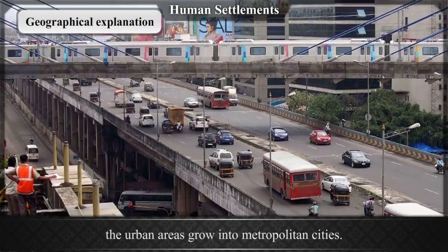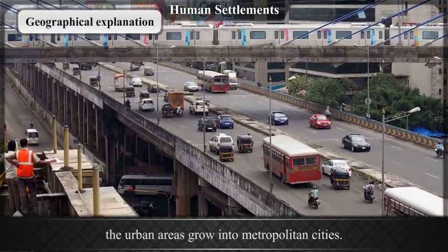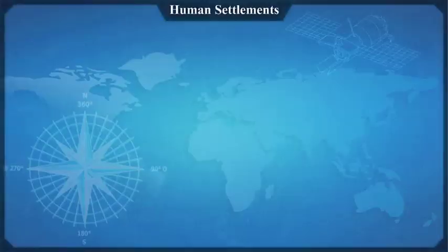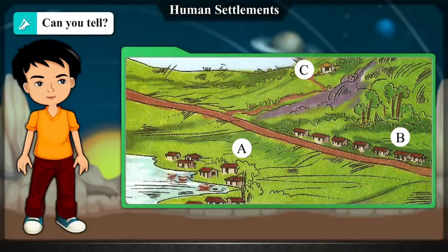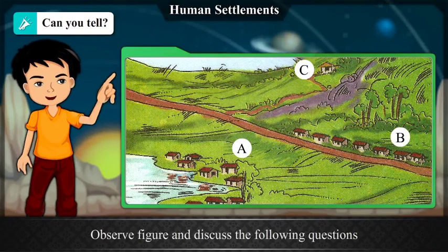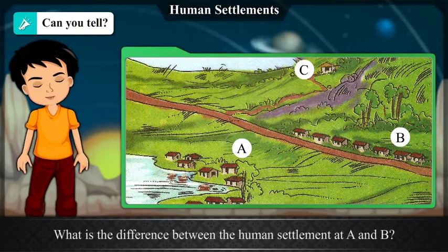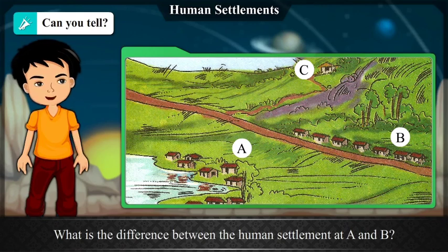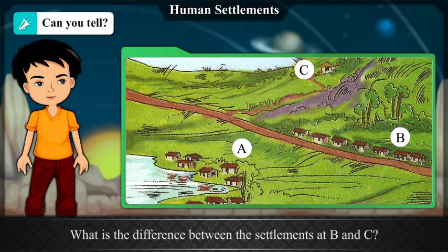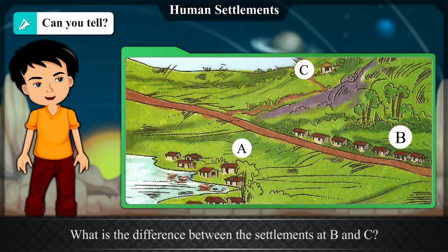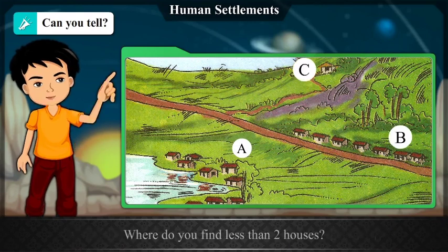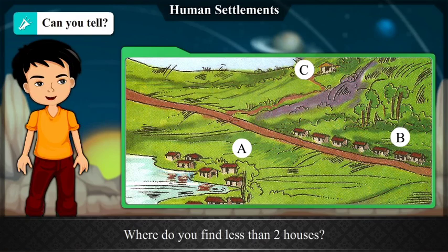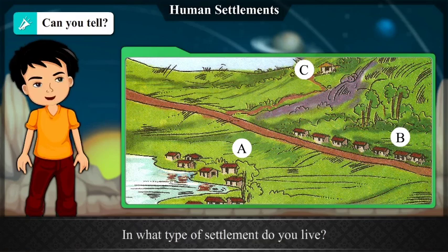The urban areas grow into metropolitan cities. Observe the figure and discuss: What is the difference between human settlements at A and B? What is the difference between settlements at B and C? Where do you find less than two houses? In what type of settlement do you live?